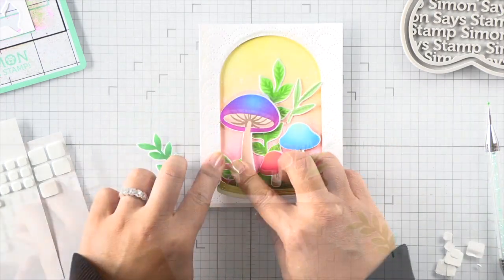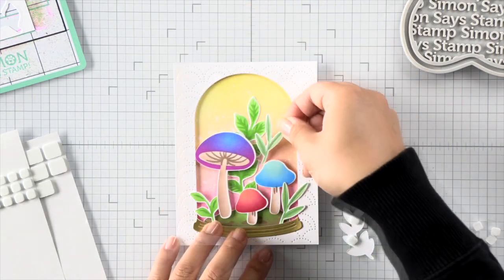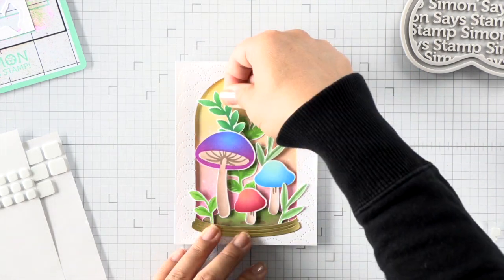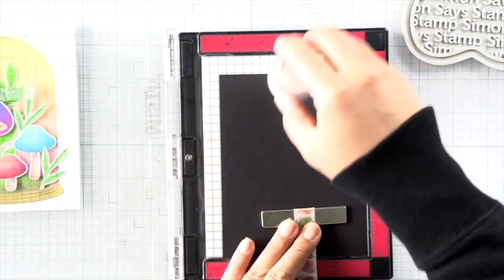Once all those mushrooms are adhered in place, I can go ahead and use the other decorative foliage to finish up my scene. I have a few of my stems peeking out beyond the dome just a little bit and that gives it a bit more interest to me. But you can keep it all inside that dome too if you'd like.